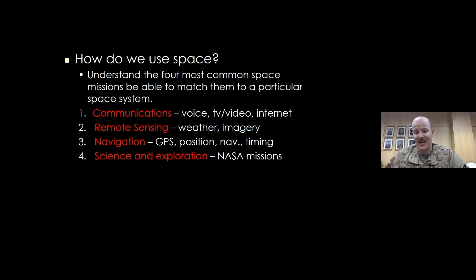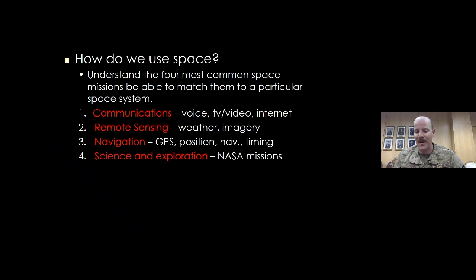Farmers also use the next piece, which is navigation. Lots of modern technology uses GPS — position, navigation, and timing. That timing piece is absolutely critical for all our ATM transactions, the stock market, traffic lights, and the power grid. It would take an order from the president himself to shut down GPS for even an hour — which they would never do. It's basically a treasured national resource. Everyone uses it now, not just the military, but we're absolutely dependent on it. Navigation is another key use of satellites and space.